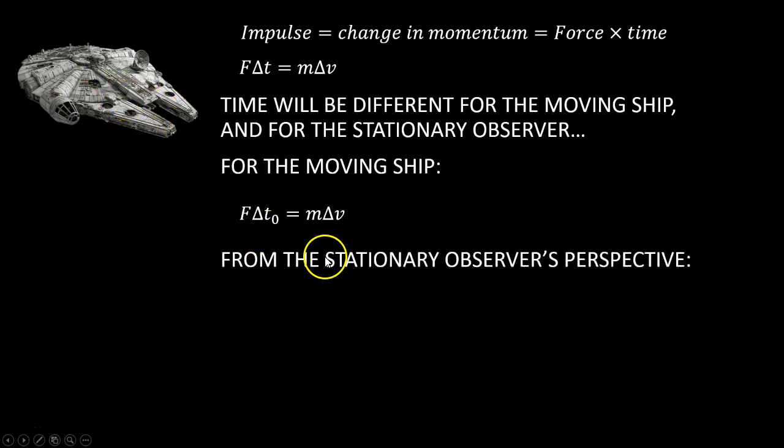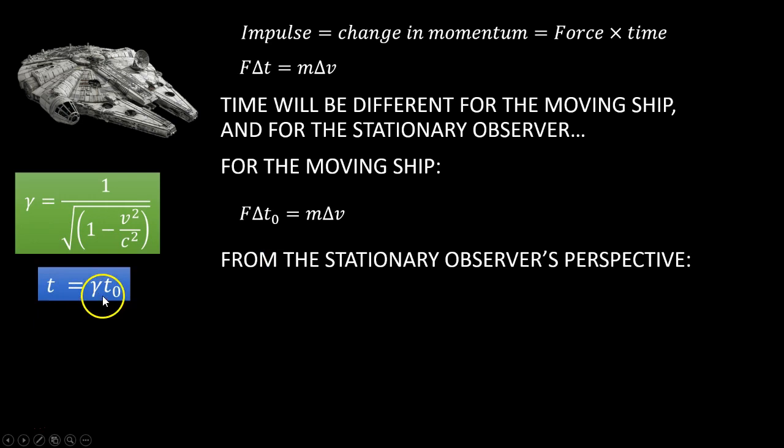Now, from the stationary observer's perspective, time is dilated by the gamma factor. And so we can rearrange this and say that the proper time is equal to the time as measured by the stationary observer over gamma. Subbing that into this equation, we get force delta T over gamma is m times v, or impulse is equal to gamma times m delta v.